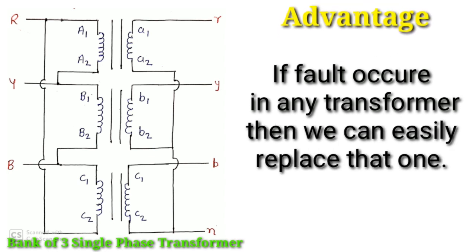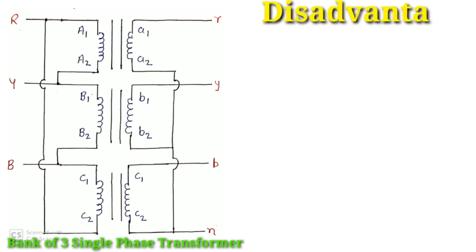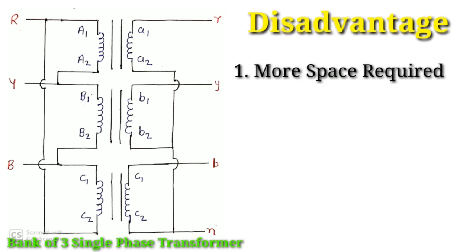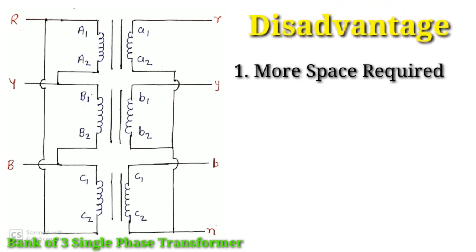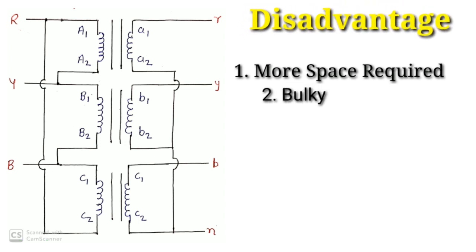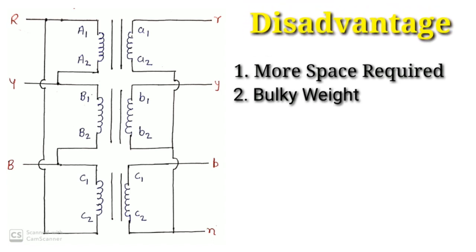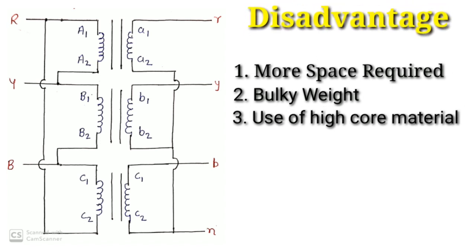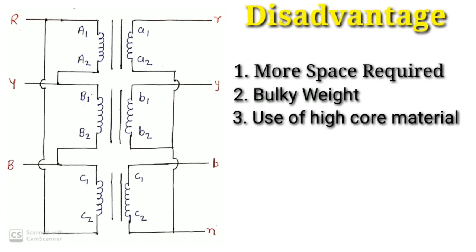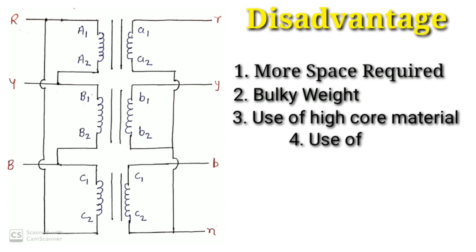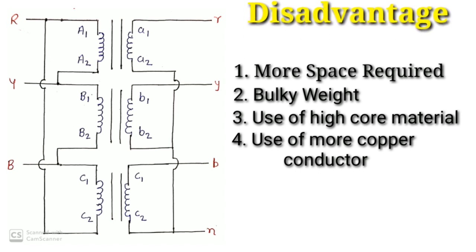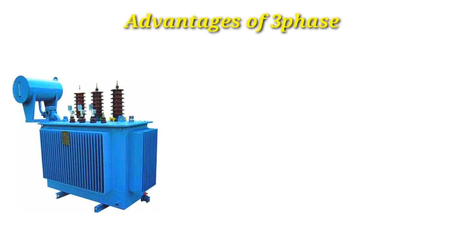These are the advantages of the bank of three single-phase transformers. Now some disadvantages: first, more space is required for this bank. Second, the overall weight of the bank is more. Third, since there are three transformers, three cores are needed, and more copper conductor is also required for all three cores.